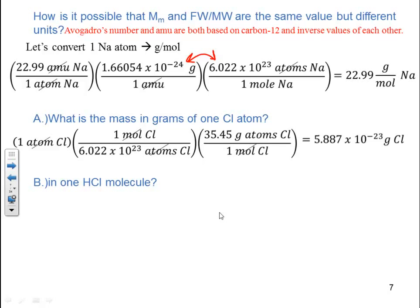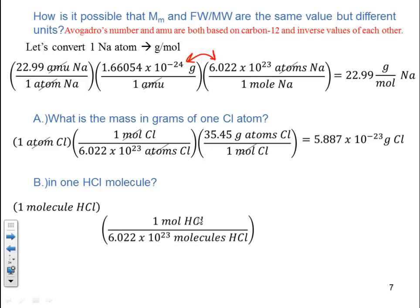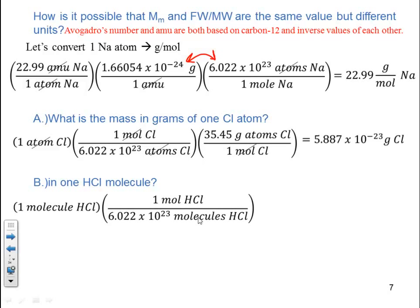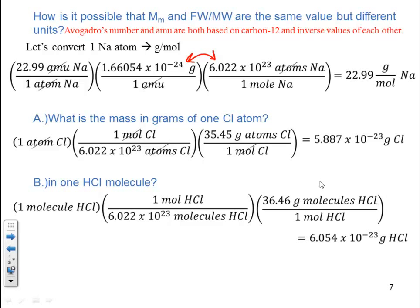Similarly, for one molecule of HCl: start with 1 molecule, multiply by (1 mol / 6.022 × 10²³ molecules), then use the molar mass of HCl — 1.01 (H) + 35.45 (Cl) = 36.46 grams per mole. Units cancel, giving a final answer of 6.054 × 10⁻²³ grams of HCl.